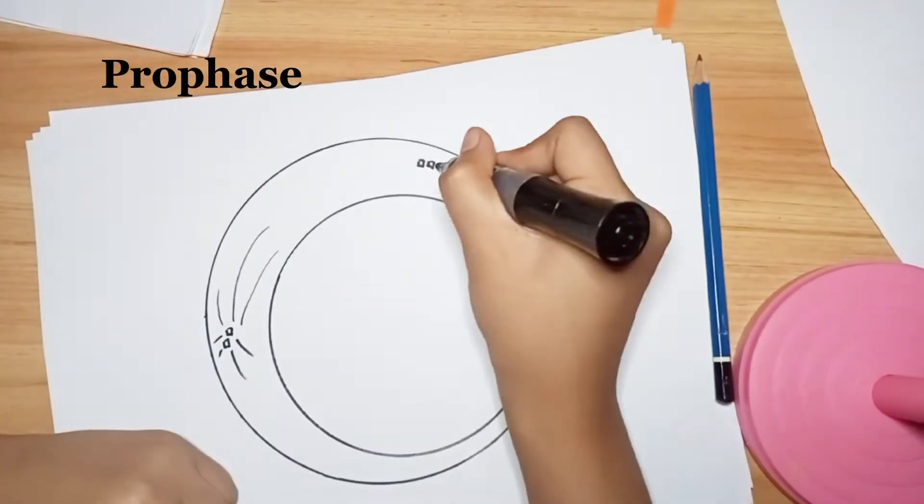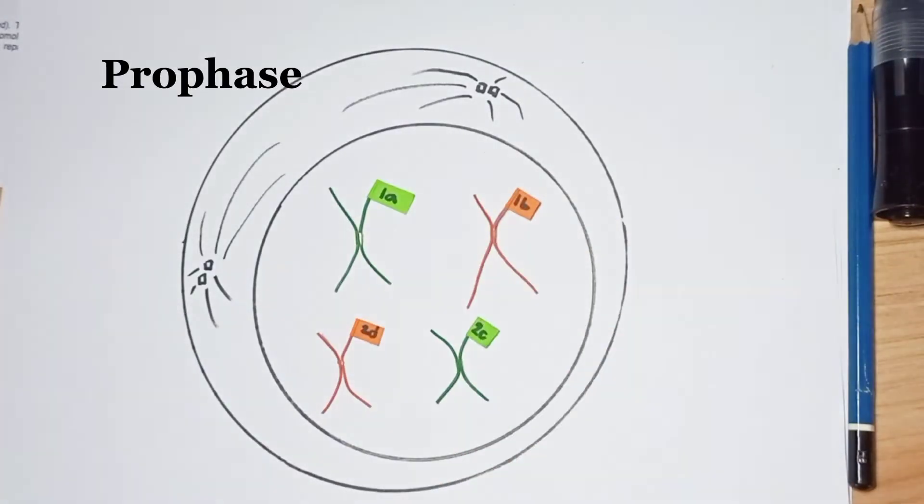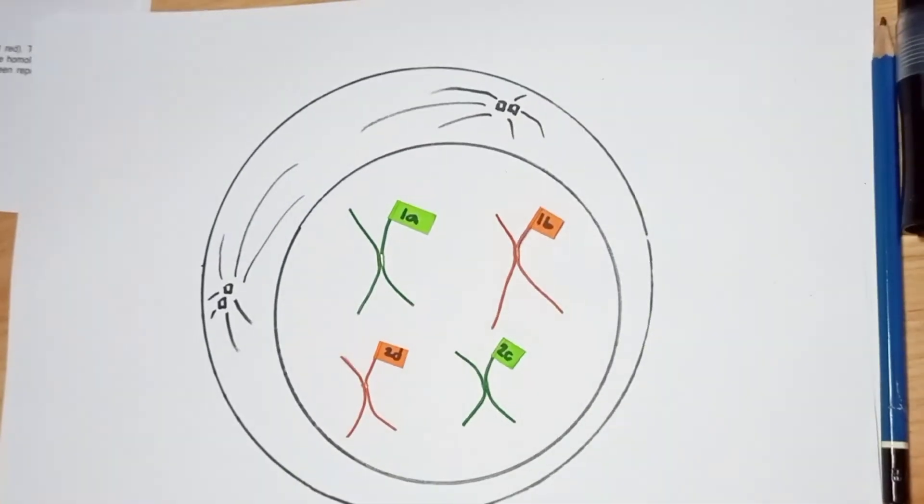The pairs of chromosomes that have been replicated are called sister chromatids, and they remain joined at a central point called the centromere.